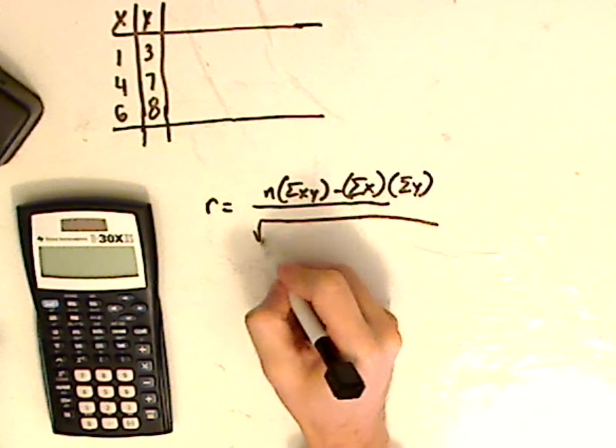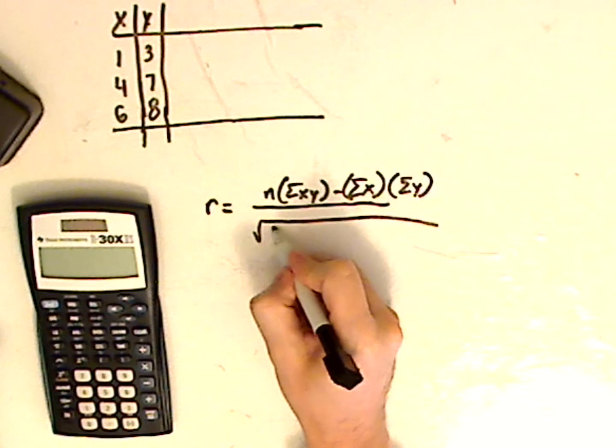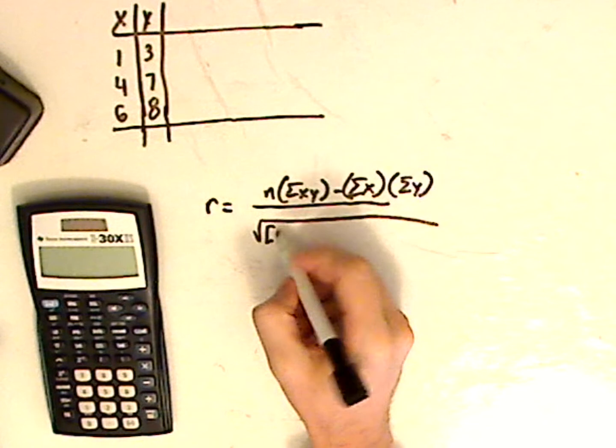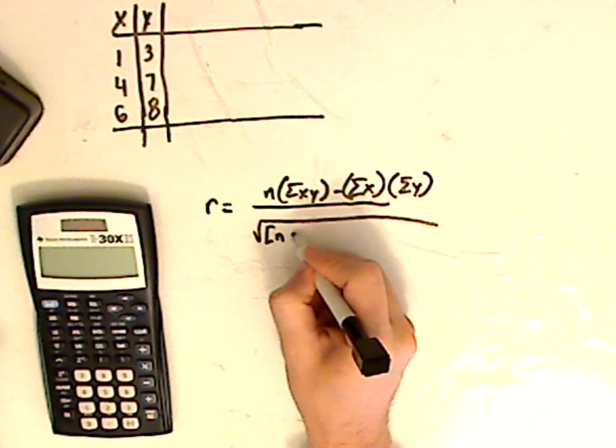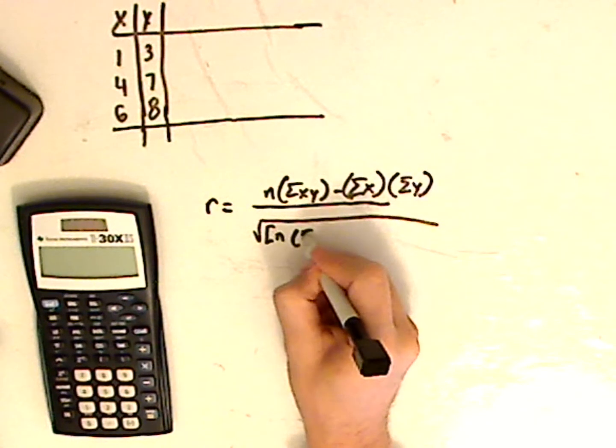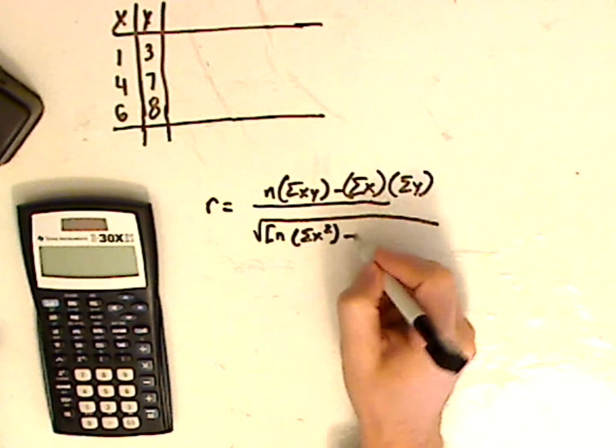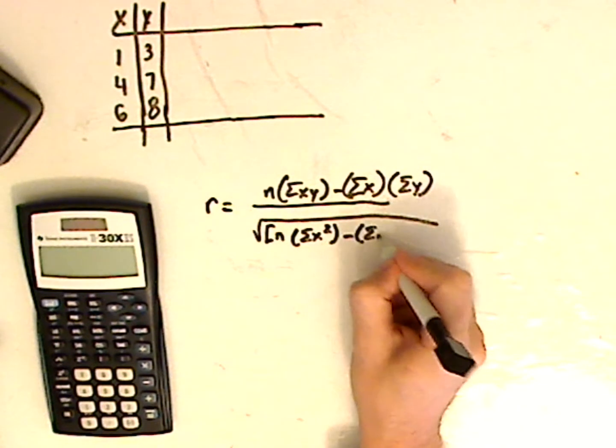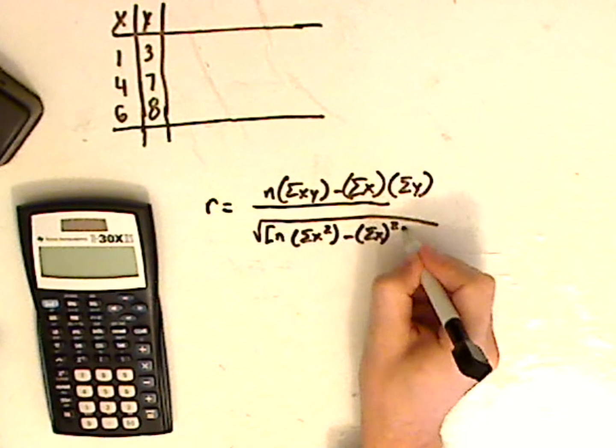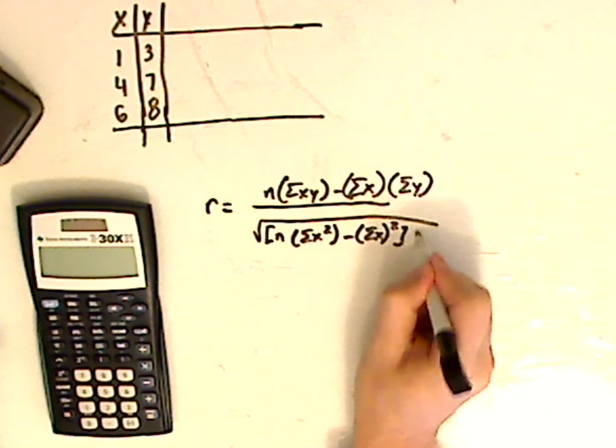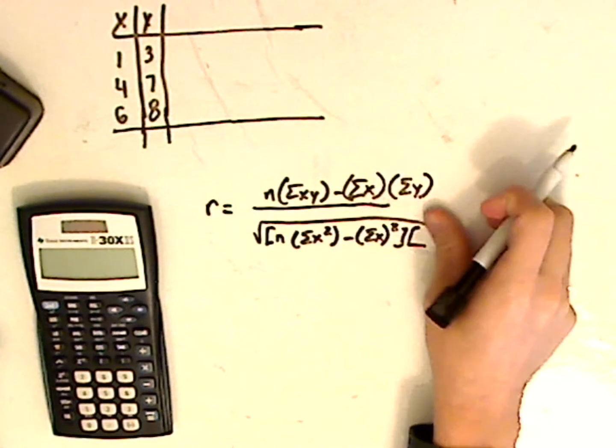Underneath the radical you have and you're going to be multiplying so I have brackets n sample size summation of x squared close parentheses minus the summation of x parentheses squared bracket because I'm going to be multiplying this times something else.